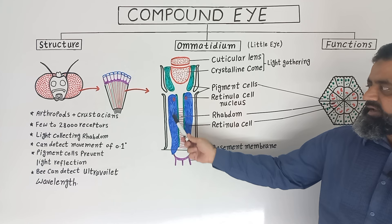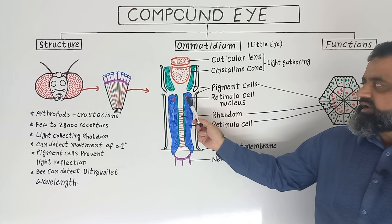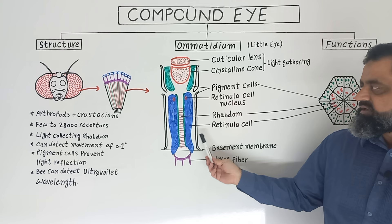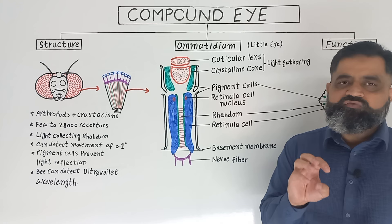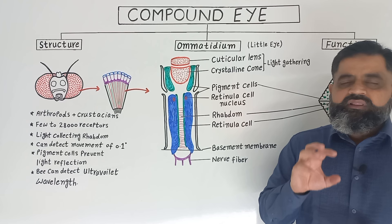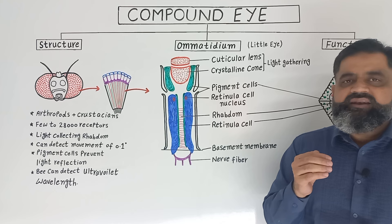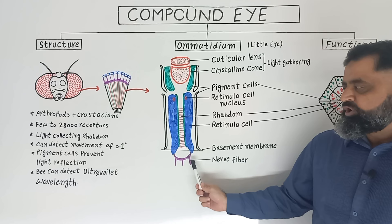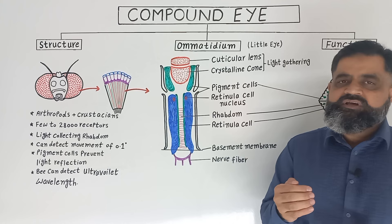Just below the pigment cells, as you can see in the diagram, there are two cells known as retinula cells. These are the nuclei of the retinula cells, and in between these two cells there is a space known as the rhabdom. The rhabdom is the area of the ommatidium which collects all the light coming from the cuticular lens and crystalline cone. In the rhabdom area, the light energy is converted into electrical energy — a nerve impulse.